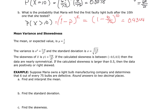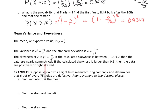Now let's look at variance and skewness. The mean or expected value mu equals 1/P. The variance sigma squared equals (1 − P)/P². The standard deviation is the square root of that. The skewness gamma one equals (1 + P) divided by the square root of P. If the calculated skewness is between −0.5 and 0.5, the data are nearly symmetrical. If it's larger than 0.5, the data are positively or right-skewed.